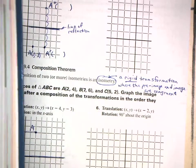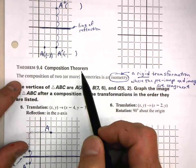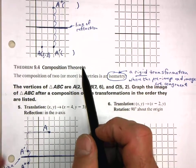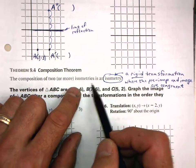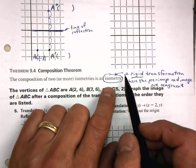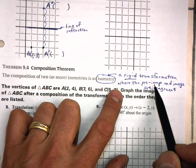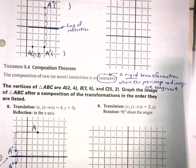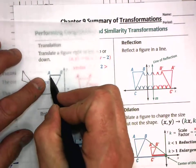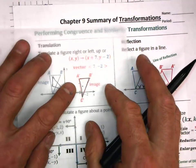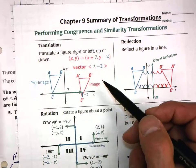Now we are looking at the Composition Theorem. Remember, a theorem is a truth that has been proven. The theorem is that the composition of two or more isometries is an isometry. What is an isometry? From 9.1, that is a rigid transformation where the pre-image and the image are congruent with each other. For example, in this summary of transformations, if you translate a pre-image over to the image, the shapes map on top of each other — they are congruent — and that is an isometry.